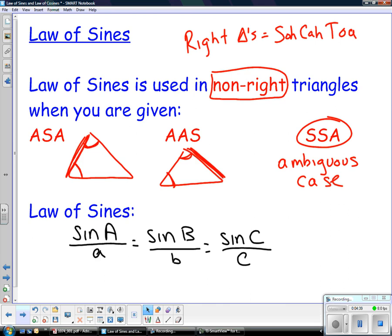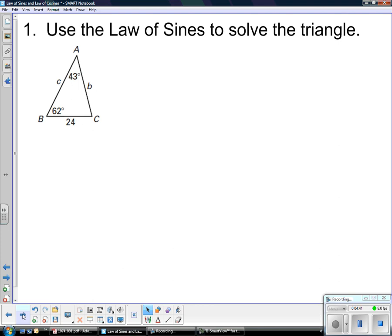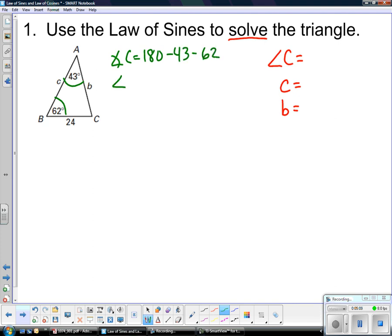So our first example. Use the law of sines to solve the triangle. When I mean solve, that means find all missing angles and sides. So I'm looking for angle C, side c, side b. Well, angle C is the easiest one to find. I'm given two angles. So angle C is 180 minus 43 minus 62. So angle C is going to be equal to 75.